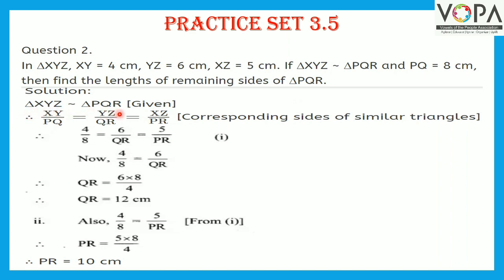Triangle XYZ similar to triangle PQR is given. Since the two triangles are similar, their sides are in proportion. So, XY upon PQ equals YZ upon QR equals XZ upon PR — corresponding sides of similar triangles. Substituting the values: XY is 4, PQ is 8, YZ is 6, QR is to be found, XZ is 5, and PR is to be found.